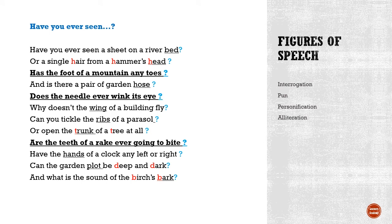In this poem the poet has used basically four figures of speech in the entire poem. This poem defines the word pun, which is used throughout. Pun means words of the same spellings used in such a way that they convey more than one meaning. Every line has a pun in the poem. All the underlined words have two or more meanings, so you have to read the poem to understand the other meaning too.